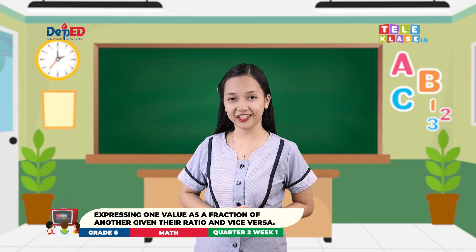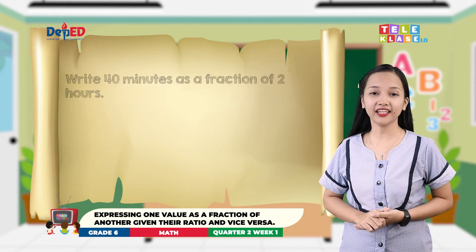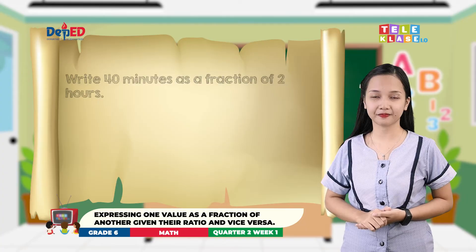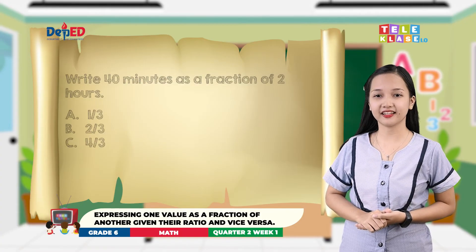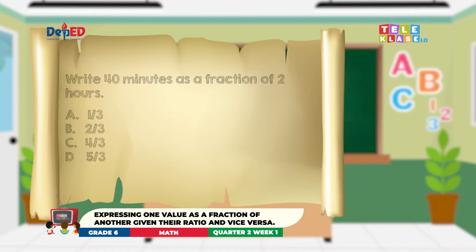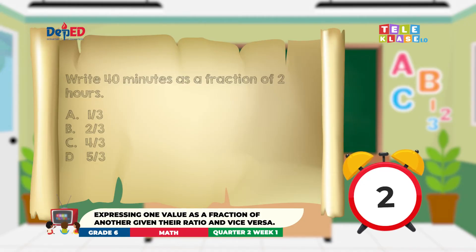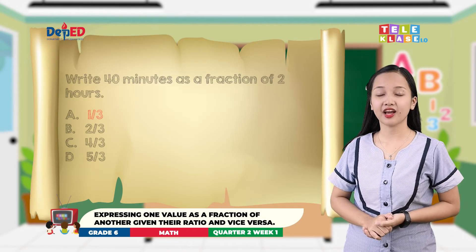Let us practice your understanding by answering the items placed in the boxes. I will give you twenty seconds for each item. Box one question: Write forty minutes as a fraction of two hours. A, one-third; B, two-thirds; C, four-thirds; D, five-thirds. The correct answer is forty over one-hundred-twenty, or one-third.